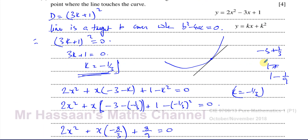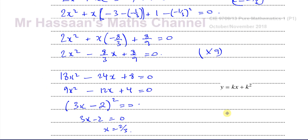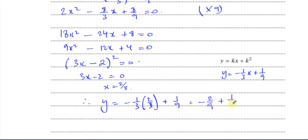Now we find y using the line equation with k equals minus one third: y equals minus one third x plus (minus one third) squared, which is 1 over 9. Substituting x equals 2 thirds: y equals minus one third times 2 thirds plus 1 over 9, which equals minus 2 over 9 plus 1 over 9, giving y equals minus 1 over 9. So the coordinates of the point where the line touches the curve are (2/3, −1/9).